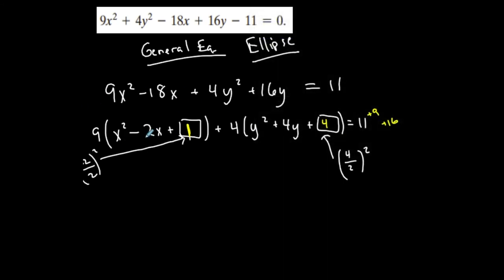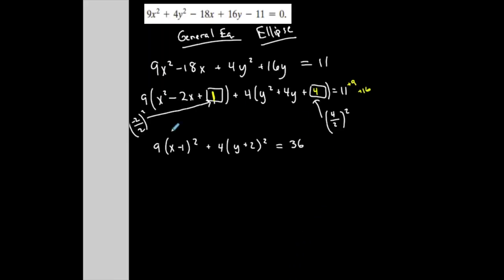Completing the square twice, I get 9 times (x minus 1) squared plus 4 times (y plus 2) squared equals 36. These are nice numbers. Now I'm very close to my standard equation.